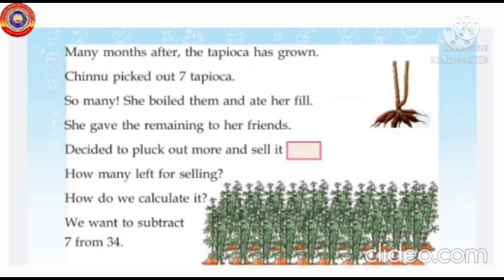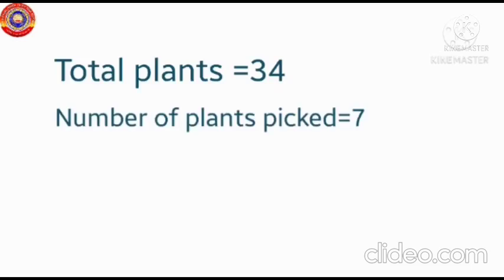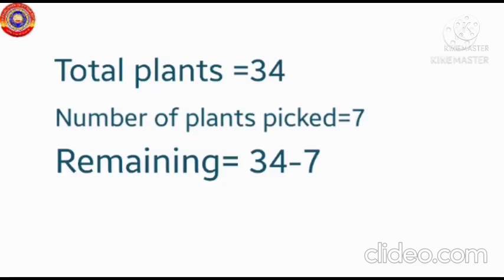Many months after, the tapioca has grown. Chinnu picked out 7 tapioca. She boiled them and ate her fill. She gave the remaining to her friends. Chinnu decided to pull out more and sell it. How many left for selling? How do we calculate it? Here we want to subtract 7 from 34. Total plants is 34, number of plants picked is 7. We want to find the remaining.